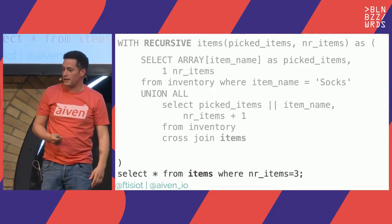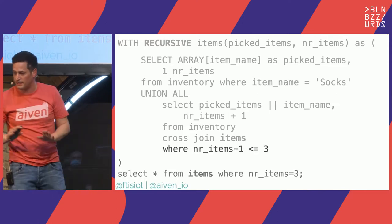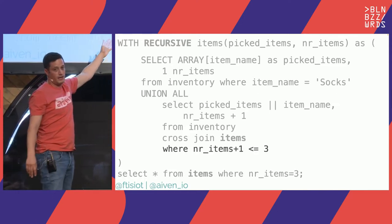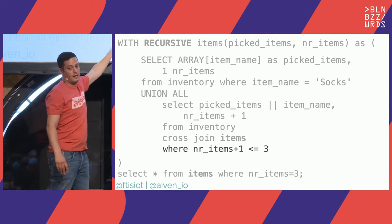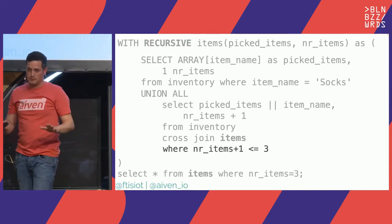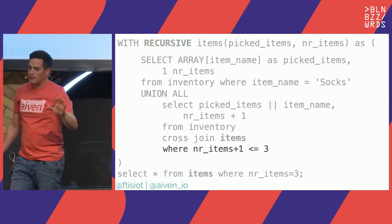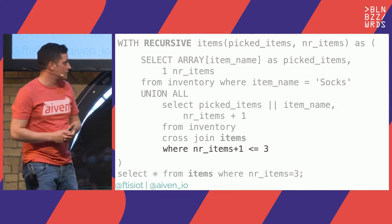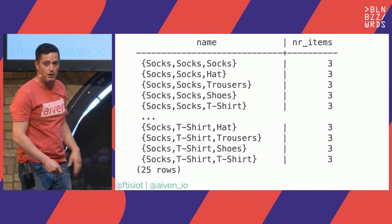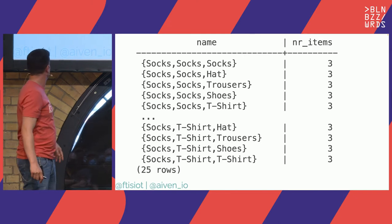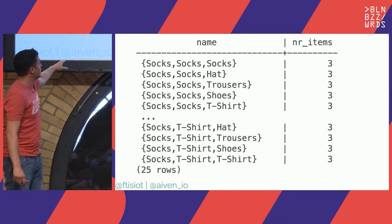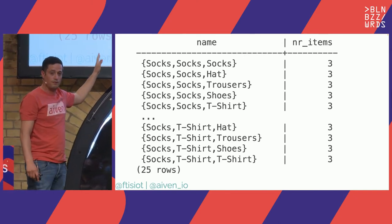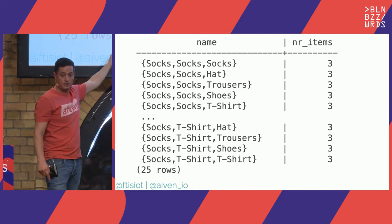Let's take it simple — we add a WHERE clause inside the recursive part and say the total number of items is less than or equal to 3. Now if we take this query and run it against the Postgres database, we get 25 rows — all the possible combinations of three items, starting with socks, which was our initial choice.